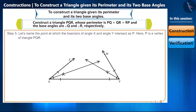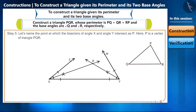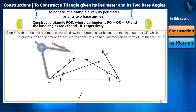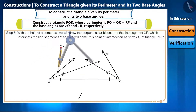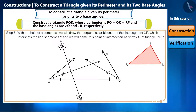Step 5: name the point at which the bisectors of angle X and angle Y intersect as P. P is a vertex of triangle PQR. We chose vertex P because angle Q and angle R are base angles, so the point of intersection is point P, which is not a base angle vertex. Step 6: draw the perpendicular bisector of line segment XP, which intersects line segment XY, and name this point of intersection as vertex Q of triangle PQR.